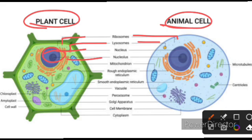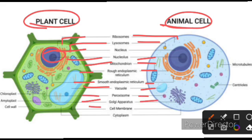Nucleus with cytoplasm. Rough endoplasmic reticulum, smooth endoplasmic reticulum. Vacuole, Golgi apparatus, cell membranes, cytoplasm. Centrioles, microtubules, microfibrils, chloroplasts, amyloplasts. Cell wall — cell wall is used in plant cells but not in animal cells.